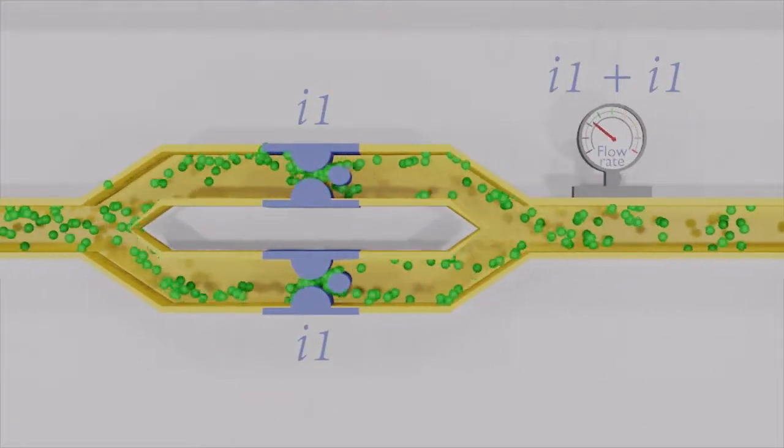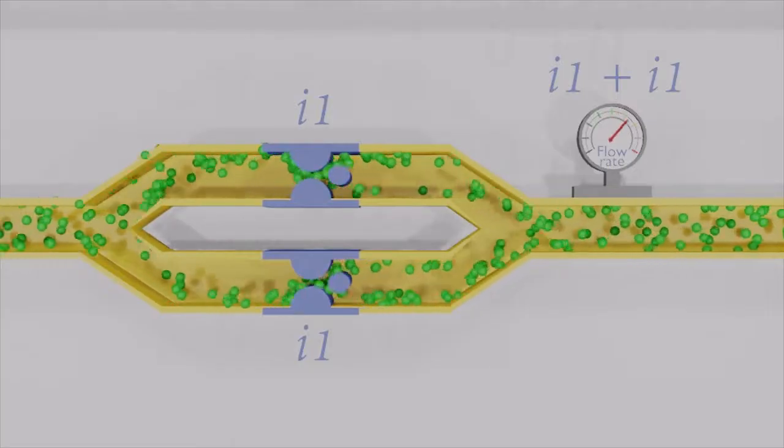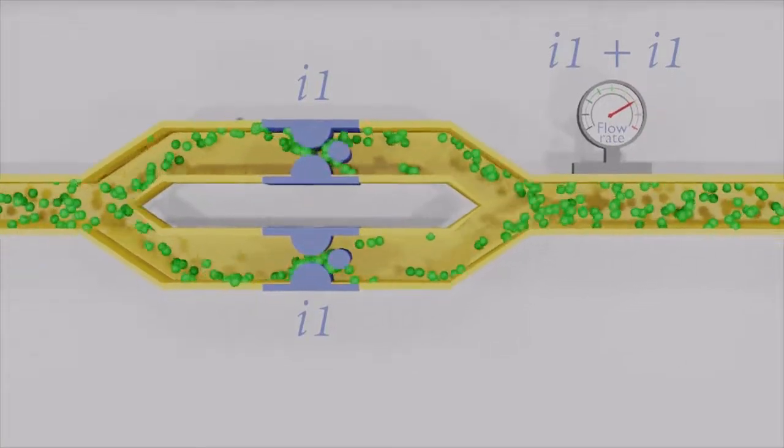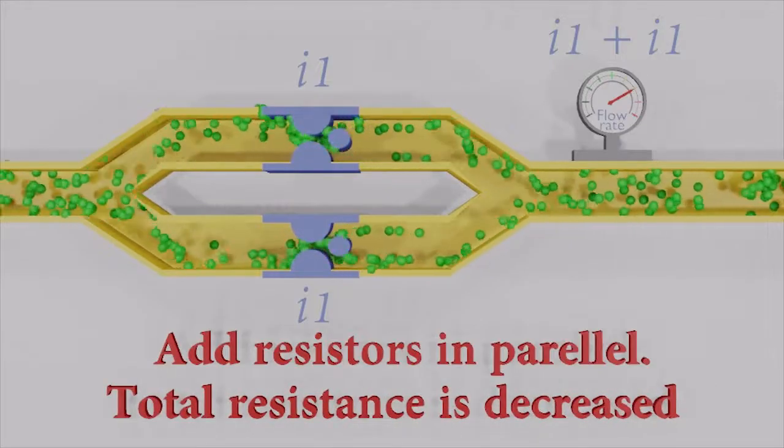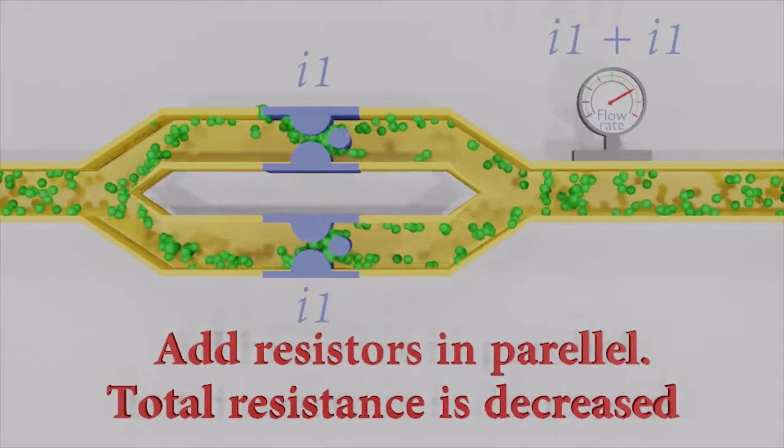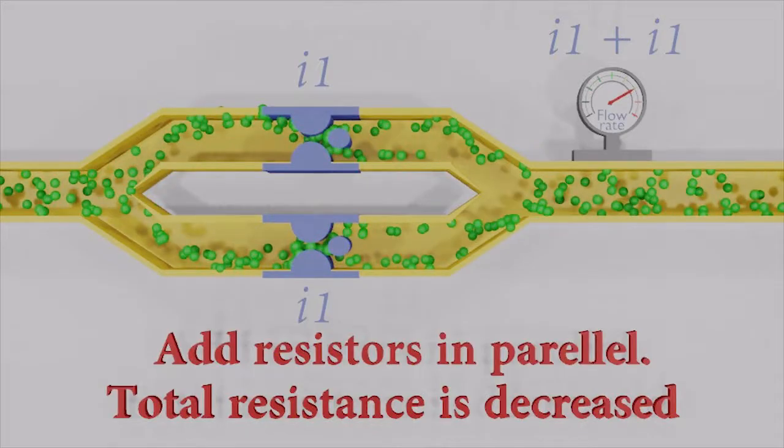I1 plus I1, that is 2I1. You see, the current has increased. That means the total resistance has decreased. Using parallel resistors, we can reduce the resistance.